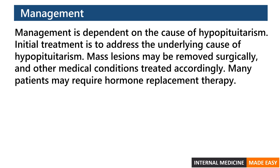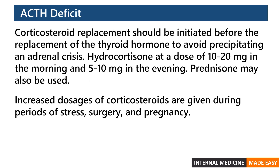Management is dependent on the cause of hypopituitarism. Initial treatment addresses the underlying cause; mass lesions may be removed surgically and other medical conditions treated accordingly. Many patients require hormone replacement therapy. In ACTH deficit, corticosteroid replacement should be initiated before thyroid hormone replacement to avoid precipitating an adrenal crisis. Hydrocortisone at 10 to 20 milligrams in the morning and 5 to 10 milligrams in the evening is given. Prednisone may also be used, with increased dosages during periods of stress, surgery, and pregnancy.